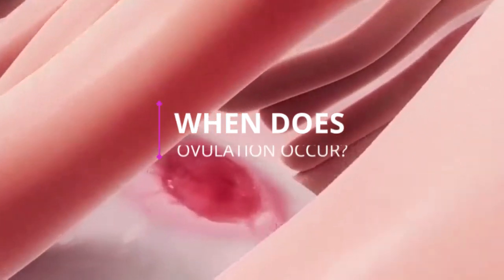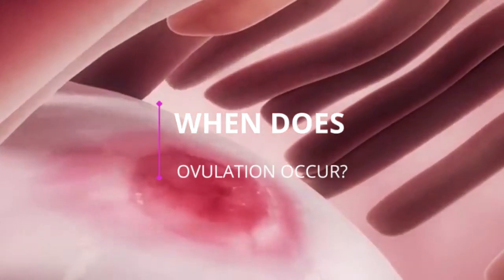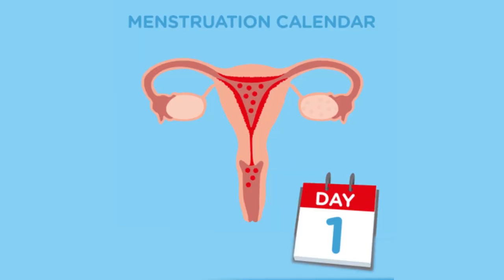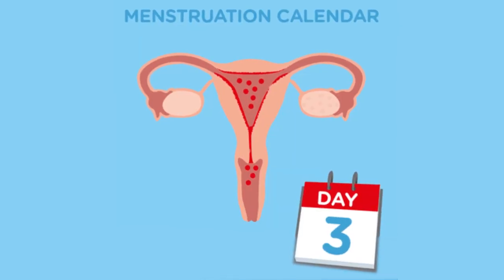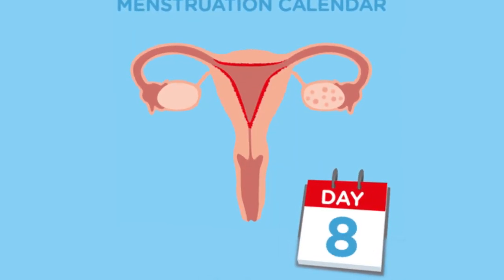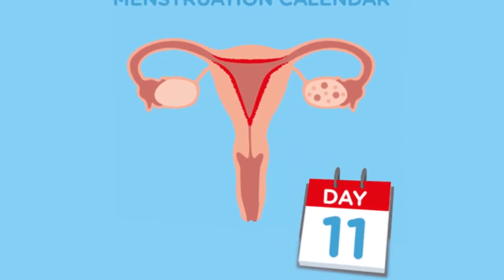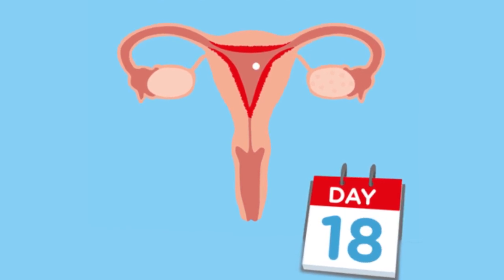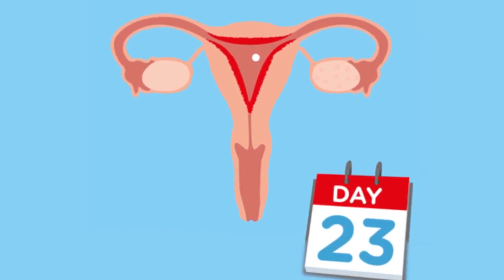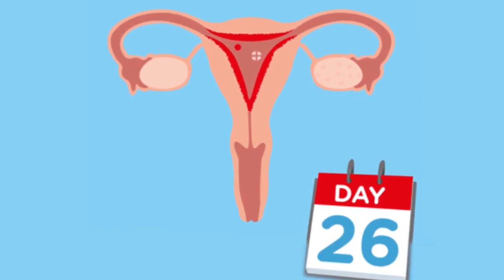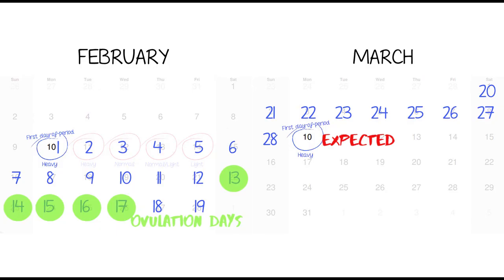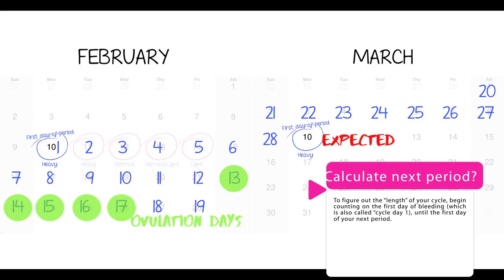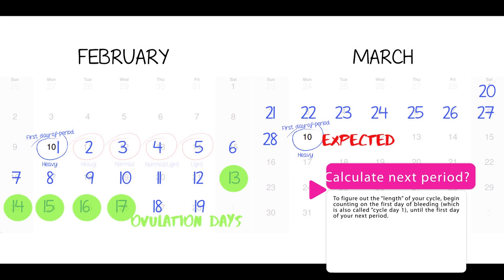When does ovulation occur? Ovulation usually happens once every menstrual cycle, but when exactly does it occur? The menstrual cycle begins from day one of your period. Ovulation usually occurs 12 to 16 days before your next or expected period starting date, so identifying 12 to 16 days before your expected period date can help you estimate your ovulation days.